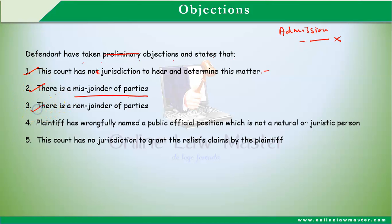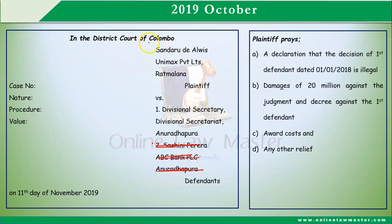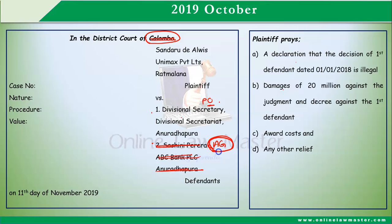Additionally, there is a non-joinder of parties. The first defendant's action is that of a public officer — the Divisional Secretary. When challenging a decision against a public officer, the Attorney General must be a defendant. Since the Attorney General is not joined as a defendant, there is a non-joinder and you can make an objection on that ground as well.